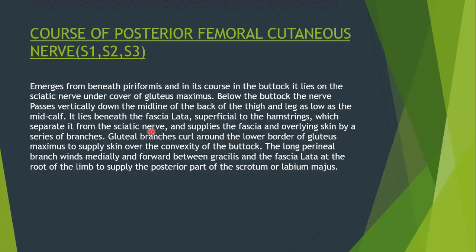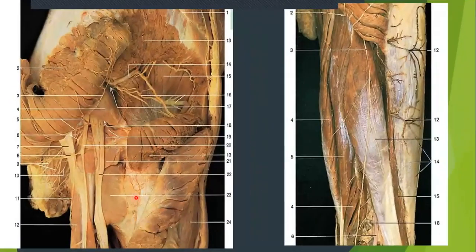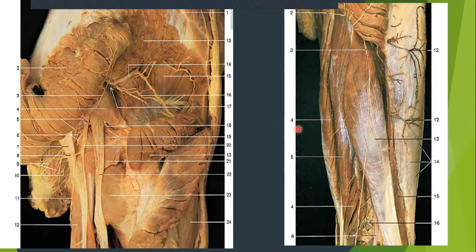Looking at the image: here is the infrapiriform compartment, and these are the inferior cluneal nerves. You can see it is lying superficial to the long head of biceps femoris and giving a series of branches for cutaneous innervation. At the level of the popliteal fossa it will pierce the roof of the popliteal fossa and go on to supply the posterior aspect of the leg as far as the mid calf.